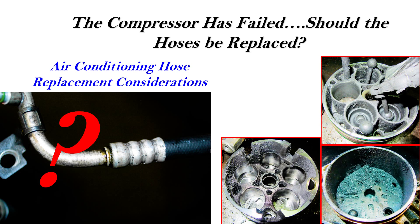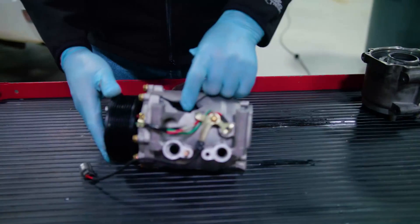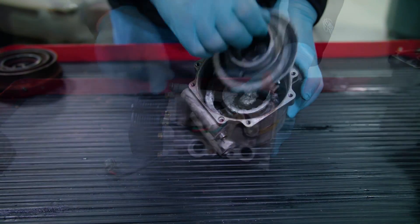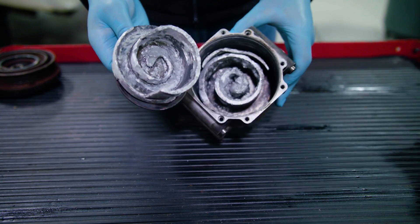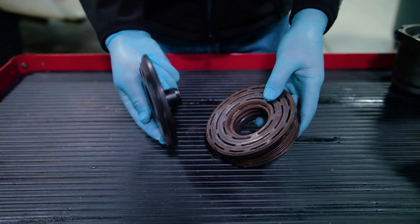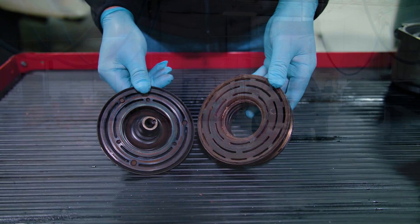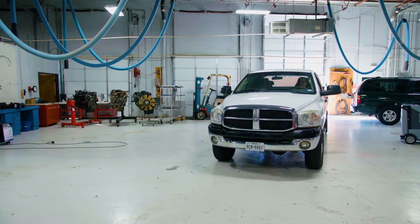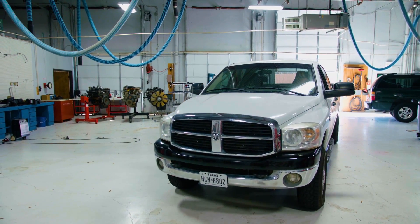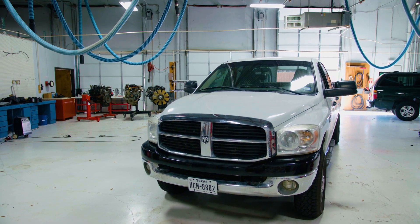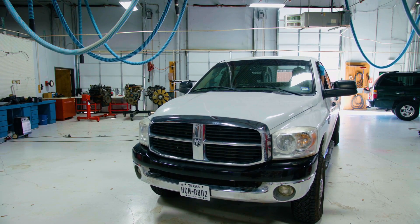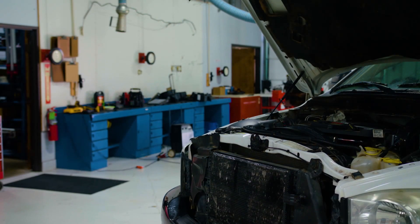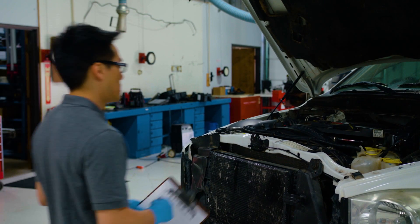In this video, we will explain why strong consideration should always be given to replacing air conditioning hoses when replacing the compressor following catastrophic failure or any other major air conditioning repairs. Undetected hose leaks are often the root cause of original compressor failure and subsequent repeat failures. Compressor replacement is one of the most comeback-prone air conditioning repairs, usually because the root cause of the original failure is not identified during the initial diagnosis.